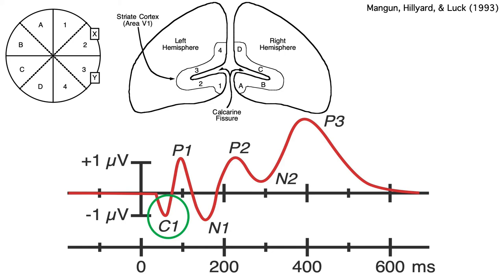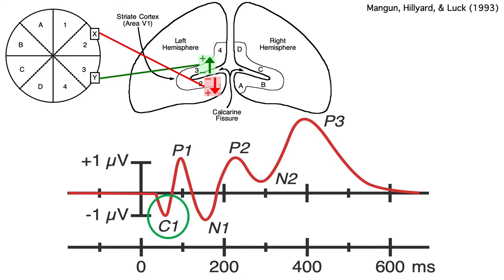This is because primary visual cortex is folded up in the calcarine fissure, and the upper and lower visual fields project to opposite sides of the fissure. This flips the polarity of the dipole for stimuli in the lower field relative to stimuli in the upper field, giving us opposite C1 polarities at our scalp electrode.